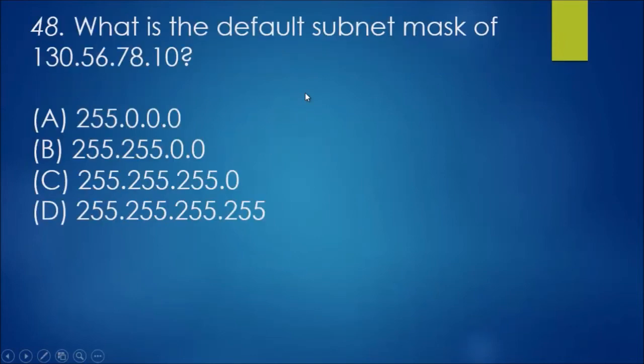For question 48, what is the default subnet mask of 130.56.78.10? Looking at this, we passed class A, so it'll be a class B because it's past 127 as the first octet. I'm going to say the answer will be B, being in the class B network.